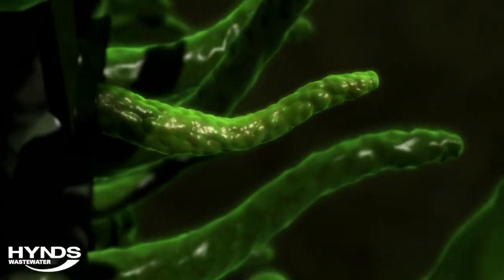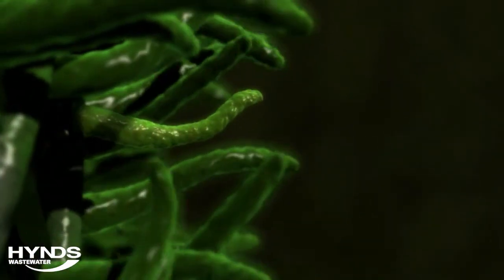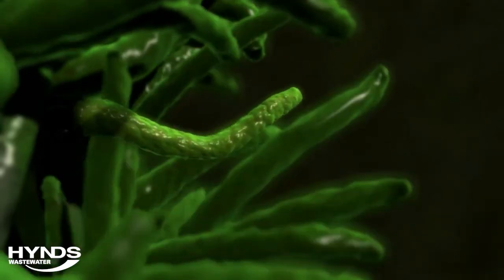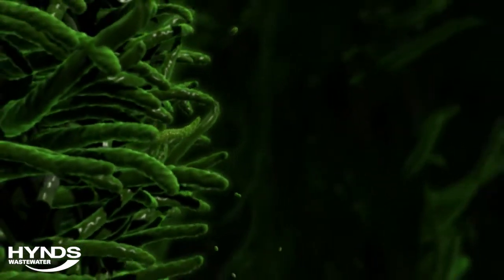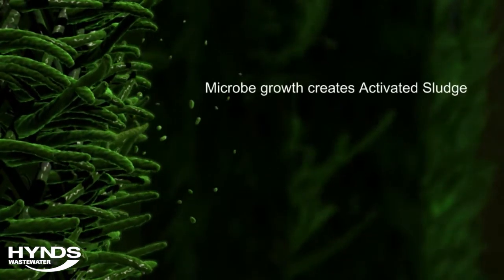As the microbes feed on the nutrients in the wastewater, they continually grow. Eventually the outer layer of the microbe can no longer be supported and drops off. This material becomes activated sludge in a process called sloughing.